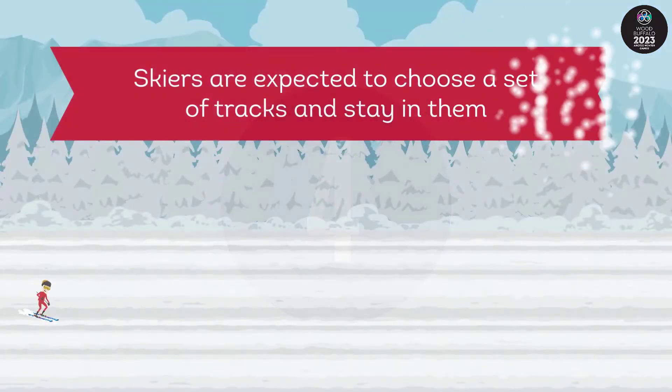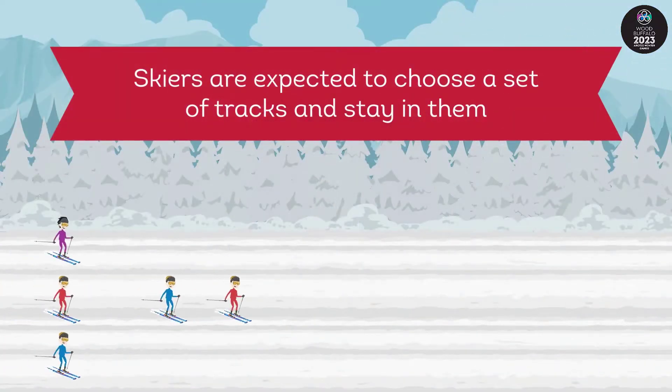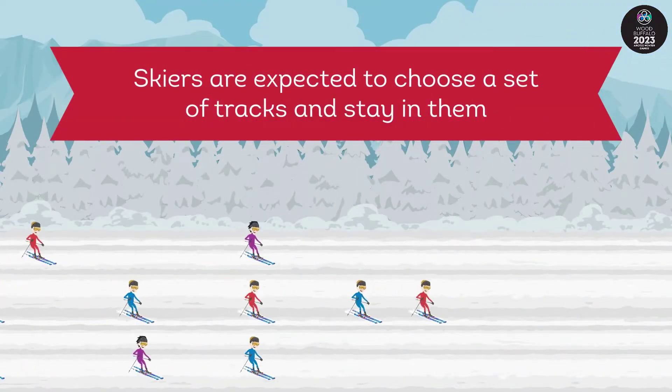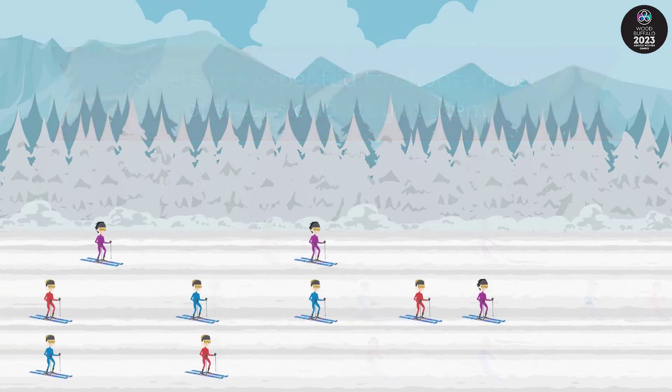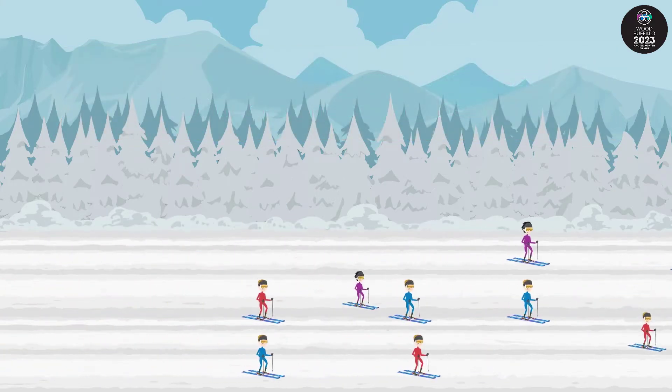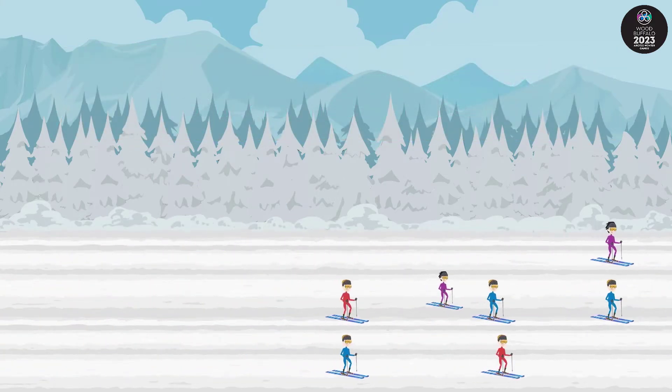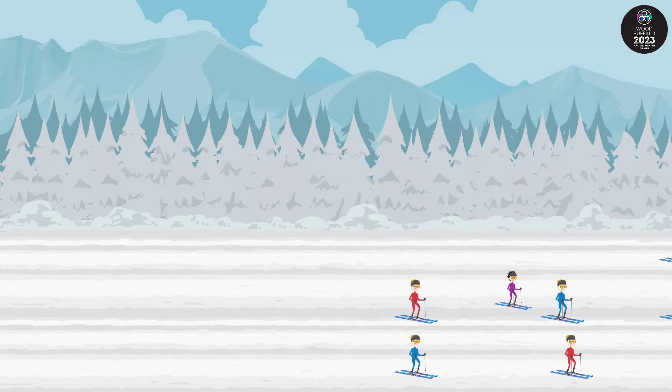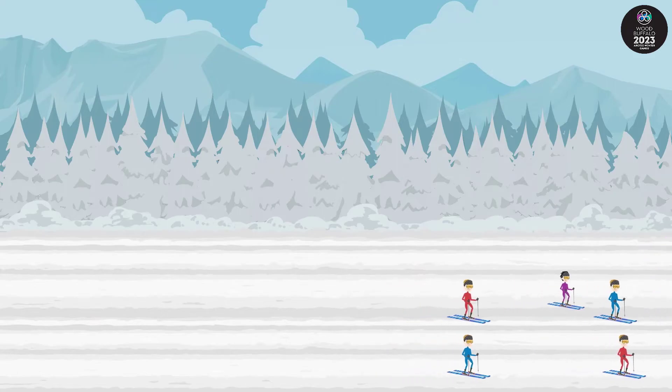Skiers are expected to choose a set of tracks and stay in them. However, they are allowed to change to a different track as long as they are not obstructing the progress of an opponent.